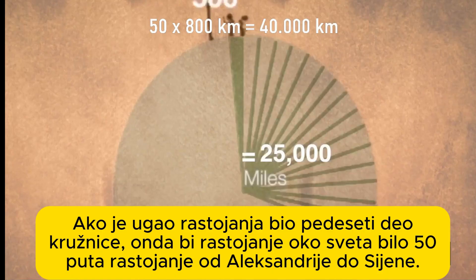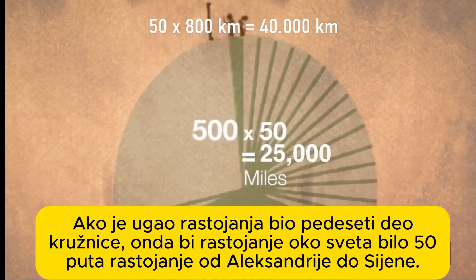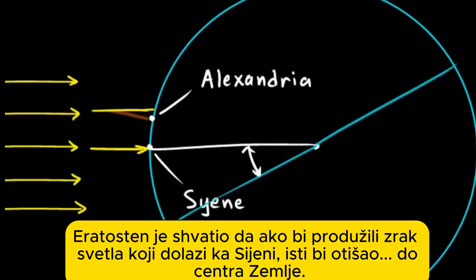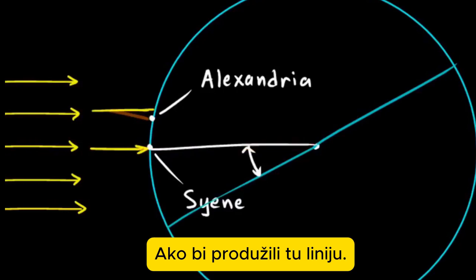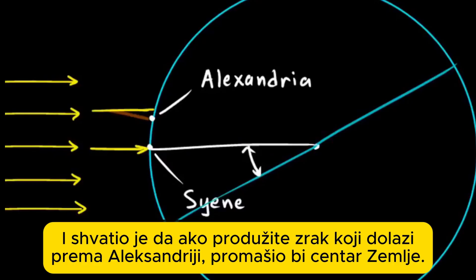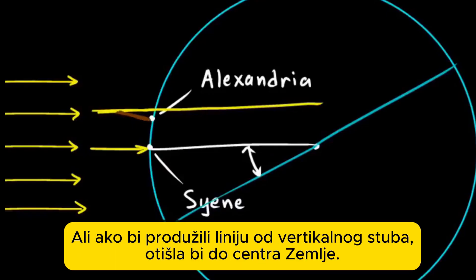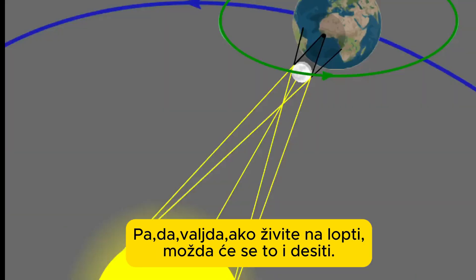If the angle was 1/50th of a circle, then the distance around the world must be 50 times the distance from Alexandria to Syene. Then Eratosthenes realized that if you were to extend this ray of light coming in at Syene, it would go all the way to the center of the earth. And he realized that if you were to extend the ray of light coming in at Alexandria, it would miss the center of the earth. But the pole set up, which was vertical — if you were to extend that line, it would go to the center of the earth. Yes, I guess if you were on a ball, you might have those things happen.